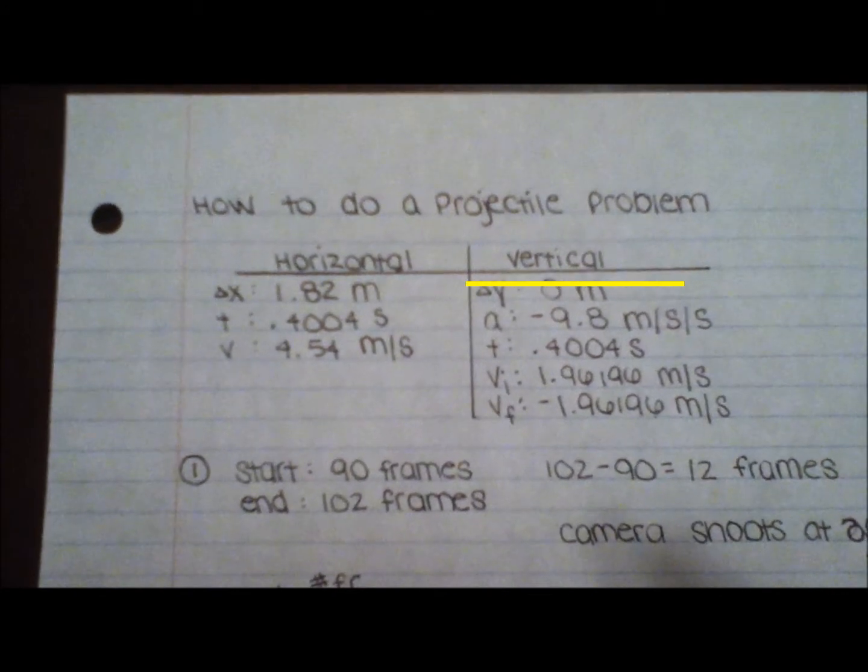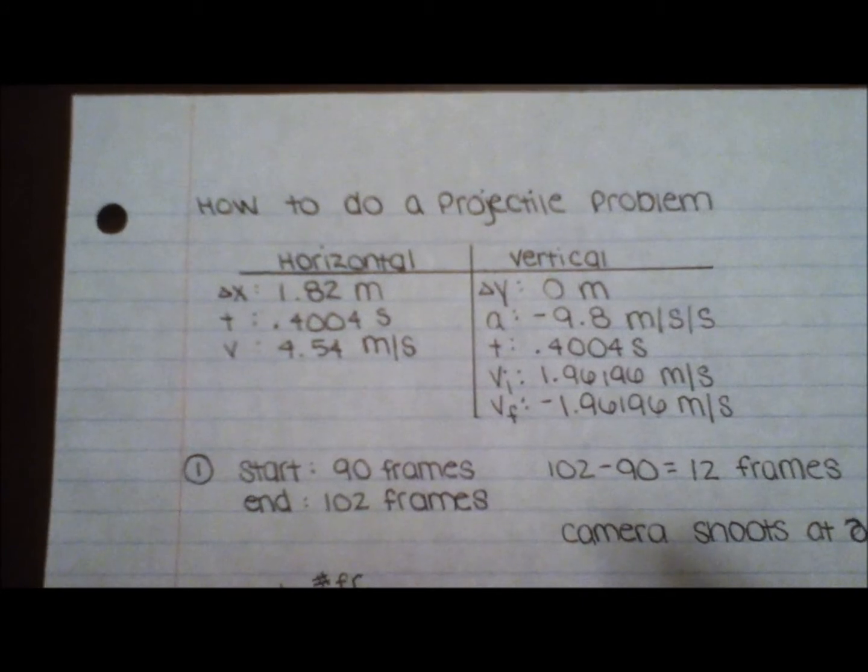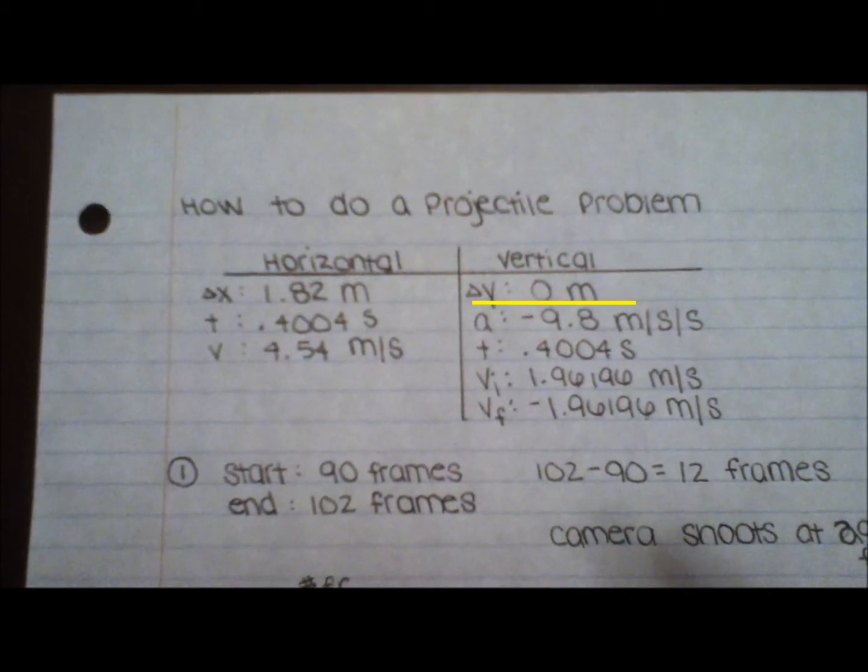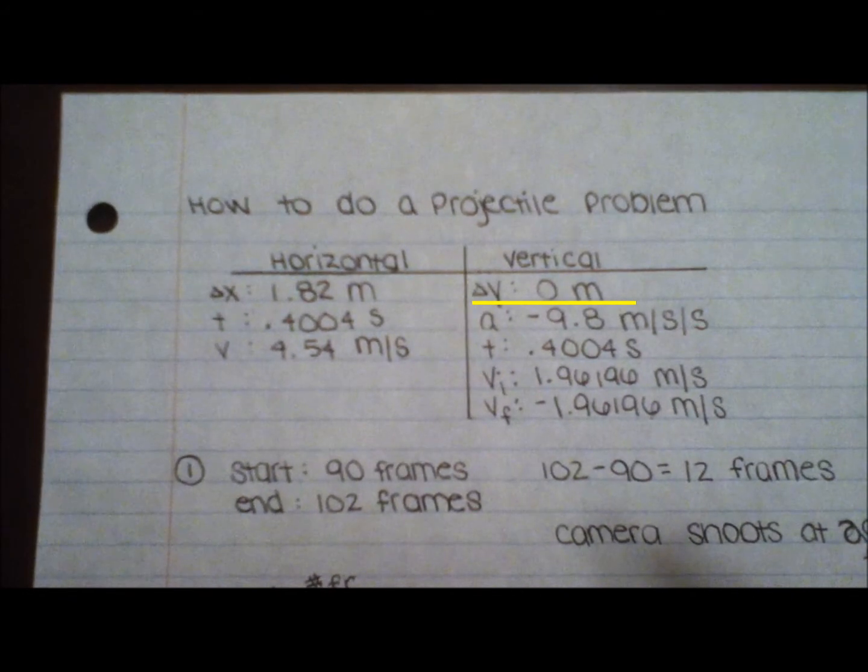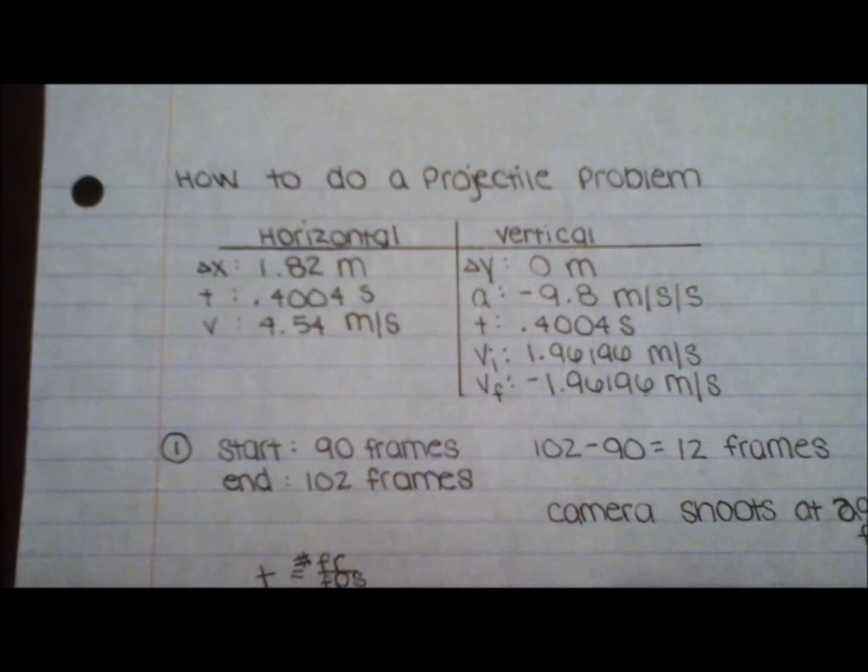On the vertical side, a minimum of three variables are needed to solve the equation. In this instance, Alexa begins and lands on the same level, so her delta y will equal zero. As Alexa is on Earth, her acceleration is negative 9.8 meters per second per second.